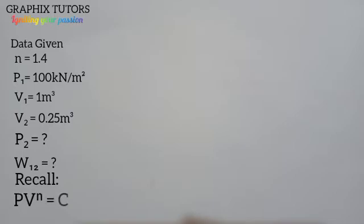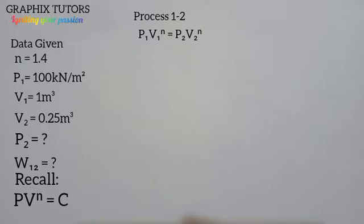there is a relationship between pressure and volume given as PV to the power of n equals C. For process 1 to 2, we write P1 V1 to the power of n equals P2 V2 to the power of n. Since we are finding the final pressure P2, we make P2 the subject of the formula. Dividing both sides by V2 to the power of n gives us P1 V1 to the power of n all over V2 to the power of n.